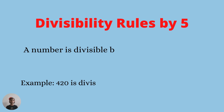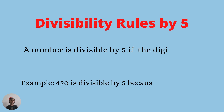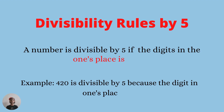Divisibility rule of five: a number is divisible by five if the digit in its ones place is zero or five. Example: four hundred and twenty is divisible by five because the digit in its ones place is zero.